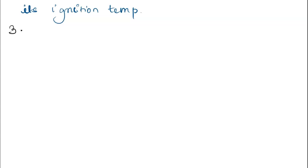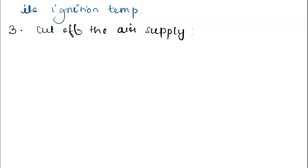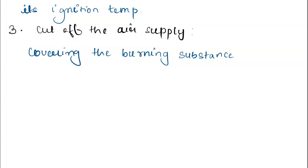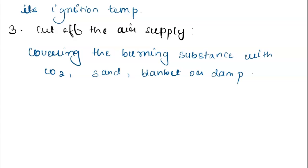The third way to control fire is to cut off the air supply. We know that air is a must condition for any combustion process to take place. If the air supply to a burning substance is cut off, the combustion process will slow down and finally stop. This can be done by covering the burning substance with CO2, sand, blanket, or damp cloth.